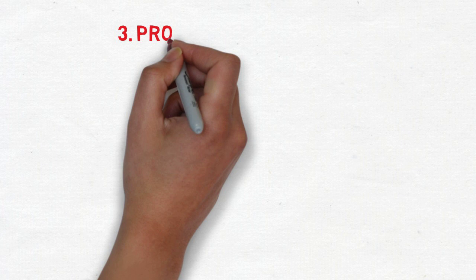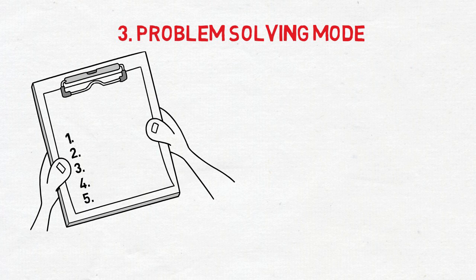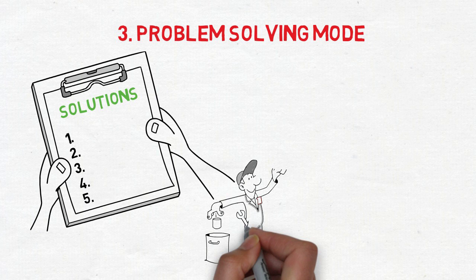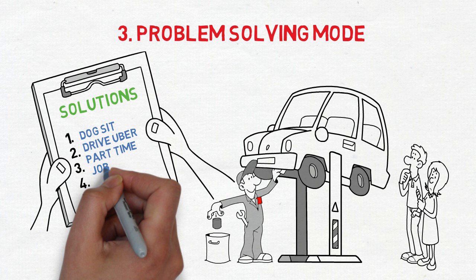Number three, go into problem-solving mode. Dwelling on a problem isn't going to help you, even dwelling on a potential problem. When you find yourself doing this, grab a piece of paper and write down five possible solutions instead. Let's say your car breaks down, and you're not sure how you're going to pay for it. Instead of worrying, brainstorm five ways that you could come up with the money in a pinch. Even if none of these ways you come up with are all that great, you will at least have switched from thought to action.